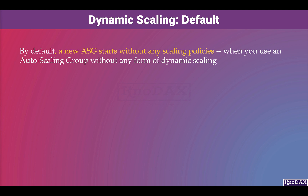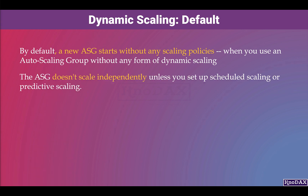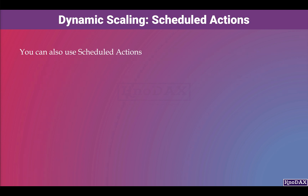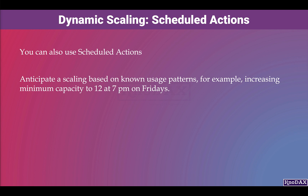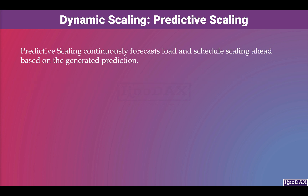By default, a new auto scaling group starts without any scaling policy. When you use an auto scaling group without any form of dynamic scaling — such as simple, target, or step scaling — the auto scaling group doesn't scale independently unless you set up scheduled scaling or predictive scaling. You can use scheduled actions in scenarios where you anticipate scaling based on known usage patterns, for example, increasing minimum capacity to 12 at 7 PM on Fridays. Predictive scaling continuously forecasts load and schedules scaling ahead based on the generated prediction.